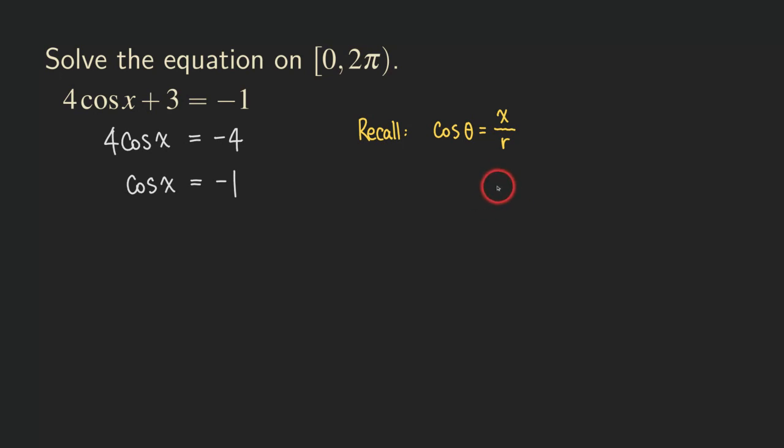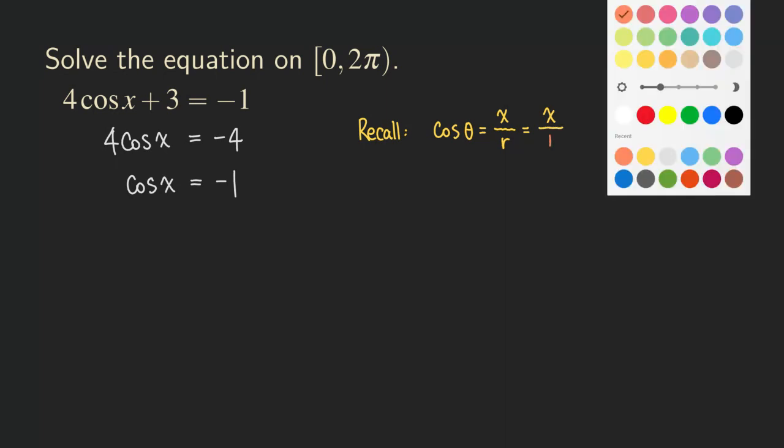If we're using the unit circle approach, because the circle is a unit circle, the radius is going to be one. We can turn the r into a one, so we can write it as x over one. That's just x.